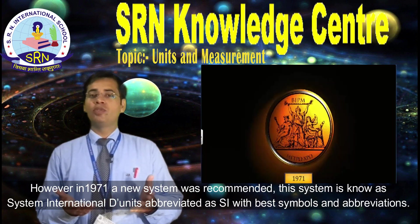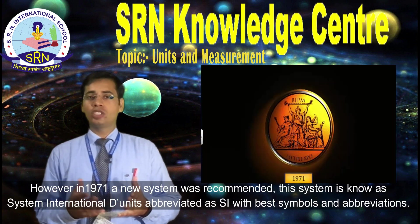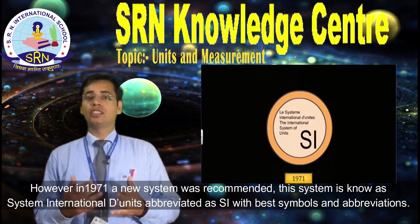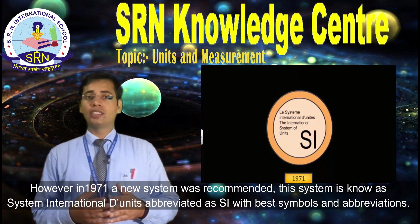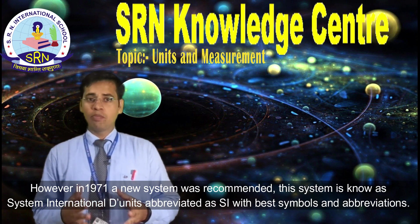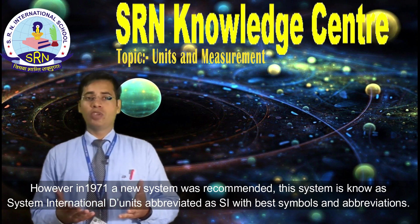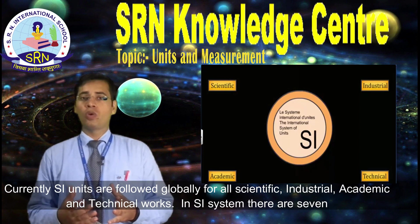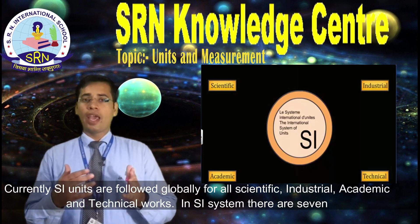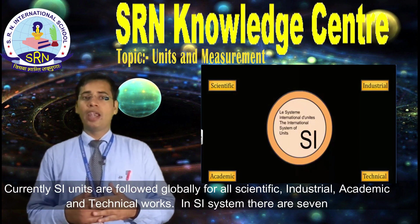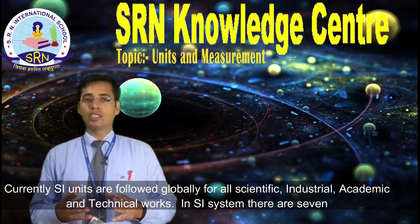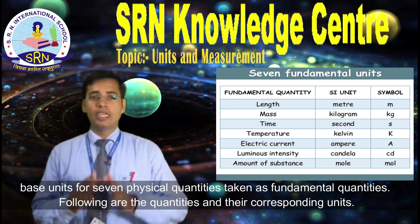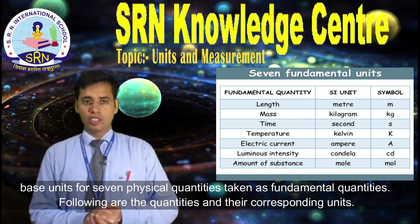However, in 1971, a new system was recommended. This system is known as the Système International d'Unités, abbreviated as SI, with defined symbols and abbreviations. Currently, SI units are followed globally for all scientific, industrial, academic and technical work. In the SI system, there are seven base units for seven physical quantities taken as fundamental quantities.